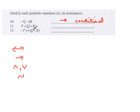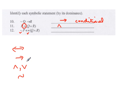Number 11 does have parentheses. Notice we have a conjunction and a disjunction — they have the same level of dominance. So the parentheses tell us which one is more dominant. Anything on the outside is more dominant, so here it's the conjunction that is most dominant. Number 12 also has parentheses. On the outside, the only two symbols are the negation and the biconditional. The biconditional is more dominant, so it is a biconditional.